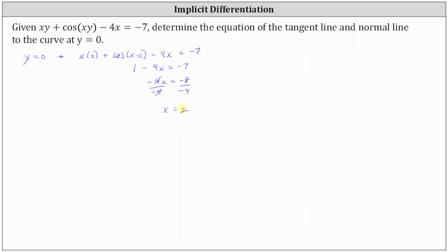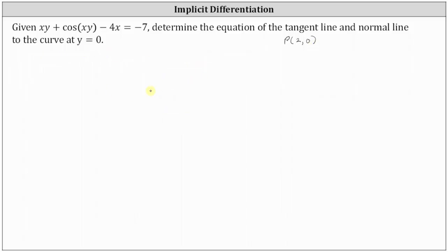So when y equals zero, x equals two, and therefore the point where we're trying to find the equation of the tangent line and normal line is the point two comma zero. For the next step, we will determine the derivative so that we can evaluate the derivative at the point two comma zero to determine the slope of the tangent line.